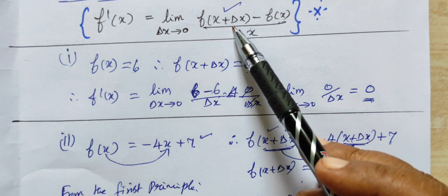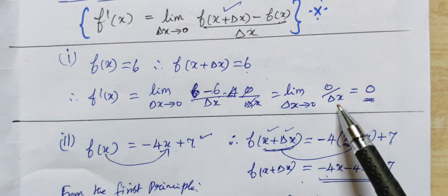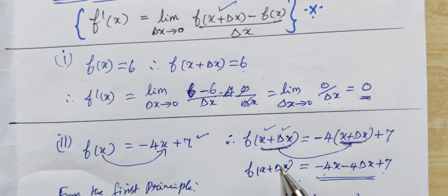Now, this formula will be substituted. This value is 6, this value is 6, so 6 minus 6 is 0, so 0 by delta x is equal to 0.